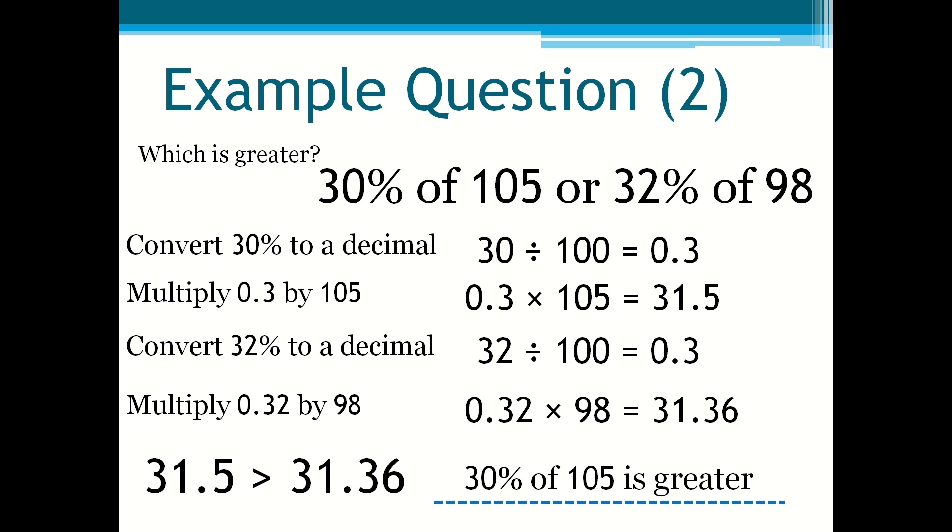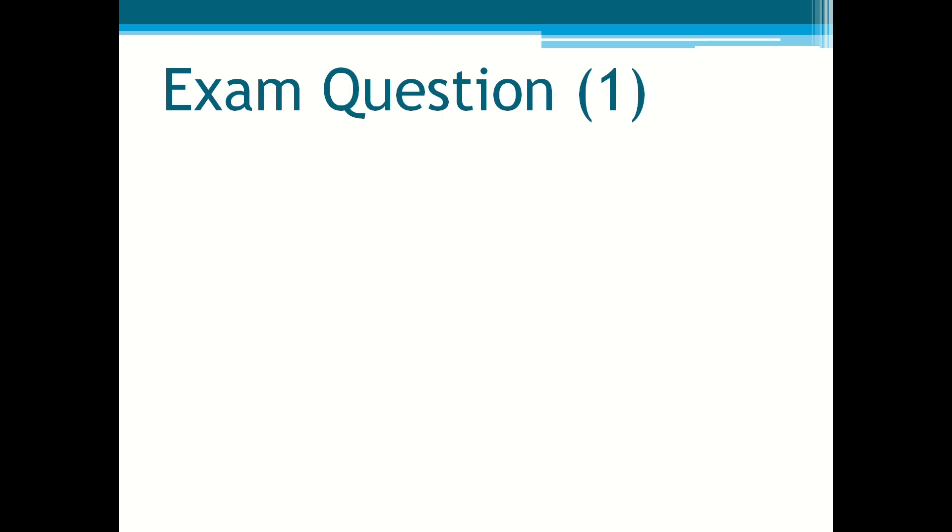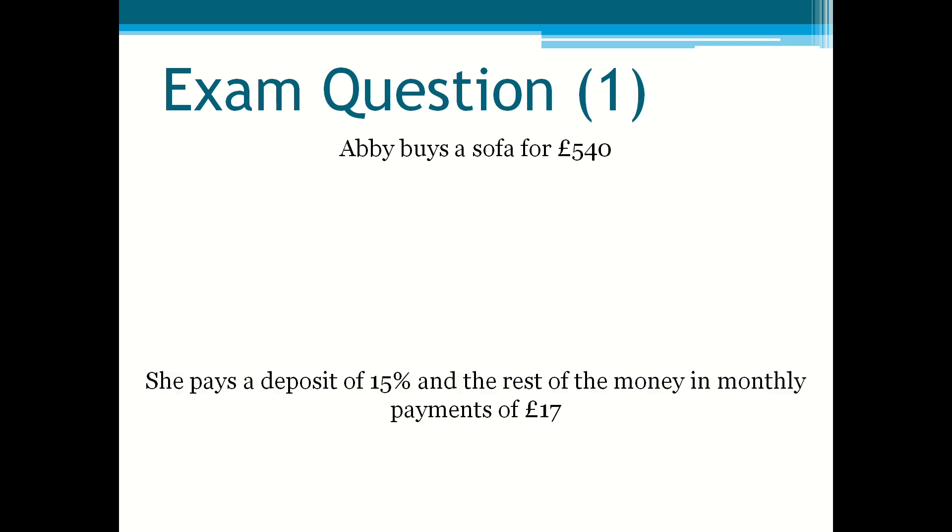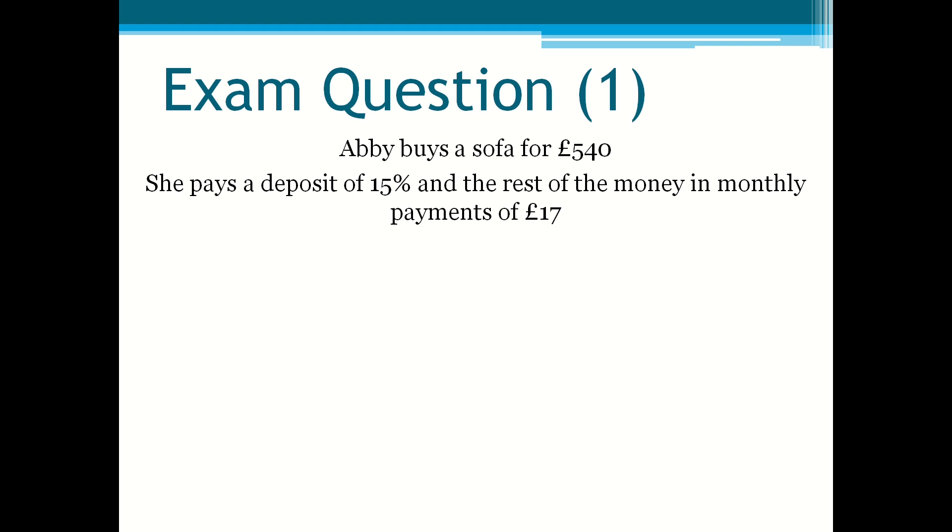Now we are going to look at the first exam question. Abby buys a sofa for £540. She pays a deposit of 15%, then the rest of the money in monthly payments of £17. How many monthly payments will Abby need to pay?